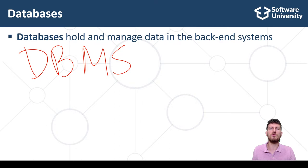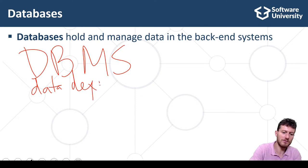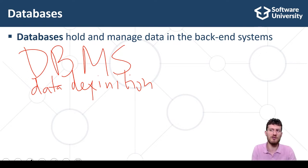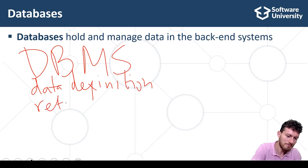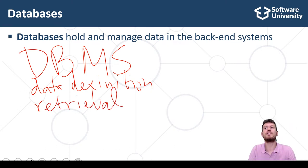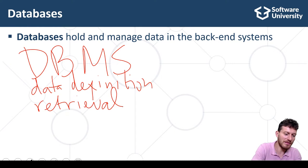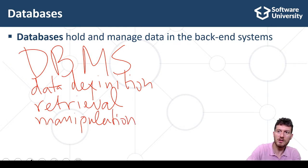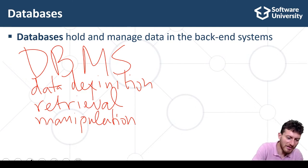DBMS systems are responsible for data definition — creating and deleting databases, creating and modifying collections, tables or other sets of data records or documents and defining their structure, fields and data format. Data retrieval — retrieving, querying, searching, filtering, extracting, combining and aggregating data. Data manipulation — inserting new data, modifying existing data, and deleting existing data.